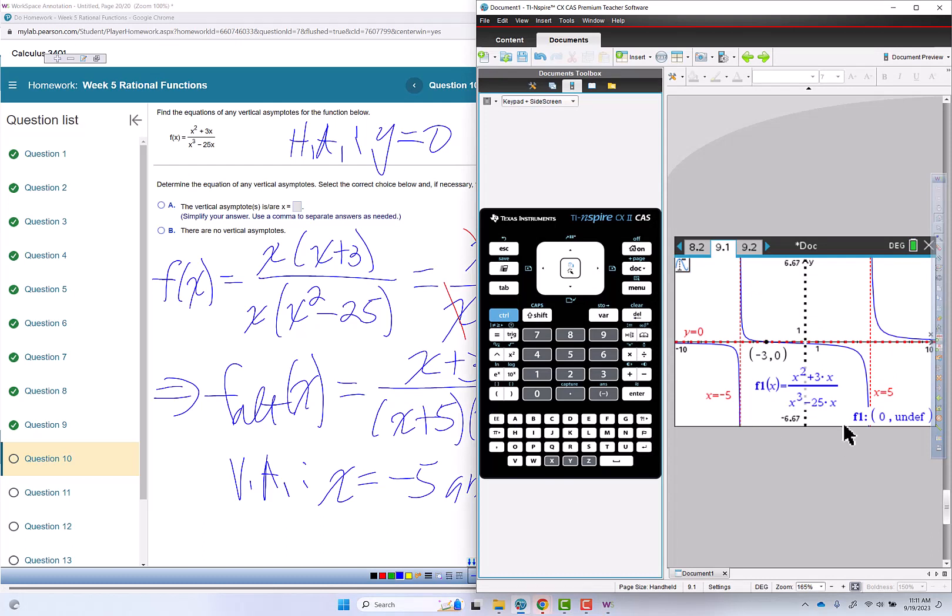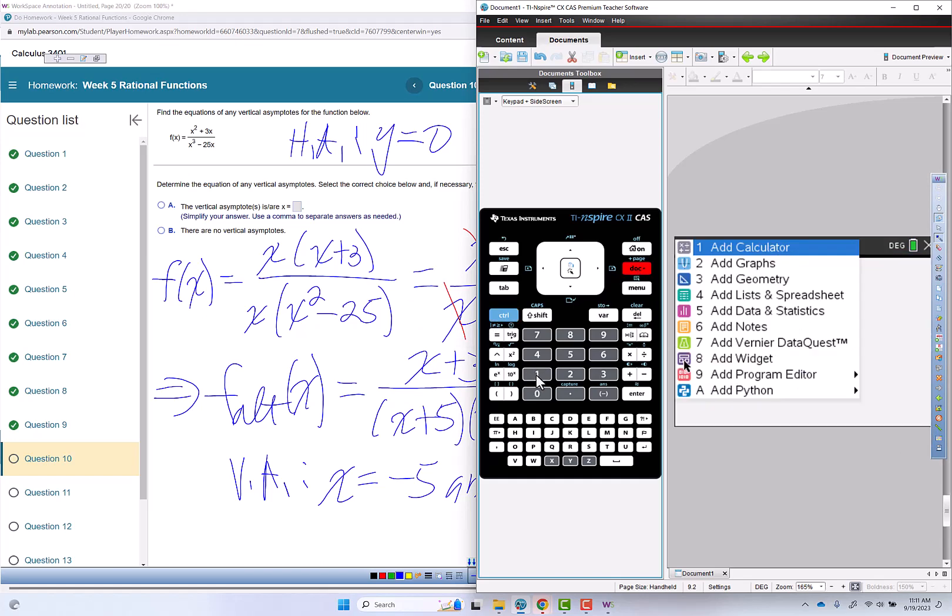So I've already graphed the function in my calculator. So here it is. We've got vertical asymptotes at x equals negative 5, x equals 5, horizontal at y equals 0. The x-intercept is at negative 3, 0. And there is no y-intercept, because at 0 I'm undefined.